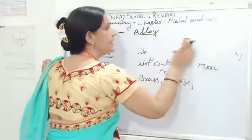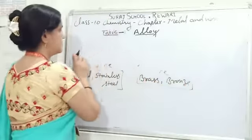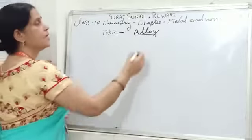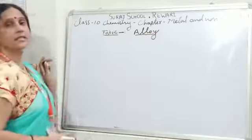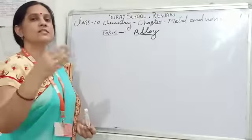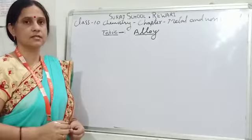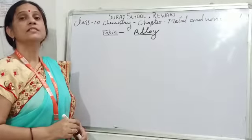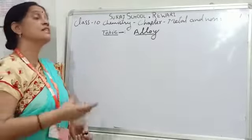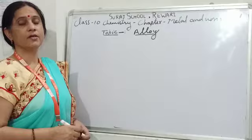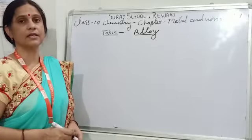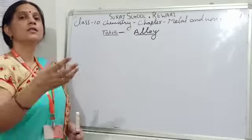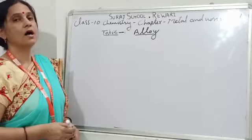Now, why do we need to make alloys? Students, alloys are made with the objectives to change the melting point of metals, to change their tensile strength, to change their texture, to change their electrical conductivity, to change their thermal conductivity, to change their appearance, etc. For all these objectives, we need to make alloys.